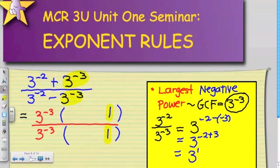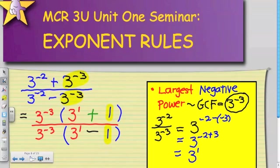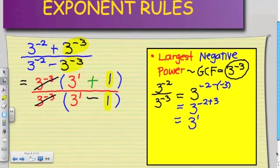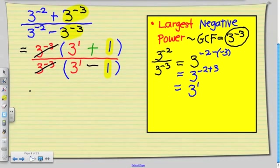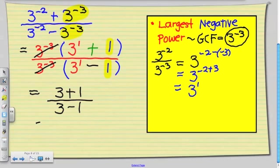So 3 to the power of 1 is going to be my first term for each binomial. In the numerator, the two terms are separated by an addition sign, and in the denominator, by a subtraction sign. The most important step is to remember that the greatest common factor cancels out — that's what makes the question look more complicated than it actually is. When I cancel my greatest common factor, I'm left with 3 plus 1 all over 3 minus 1, which gives a final answer of 4 over 2, which simplifies to positive 2.